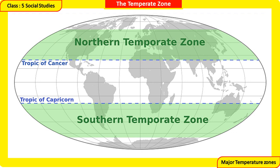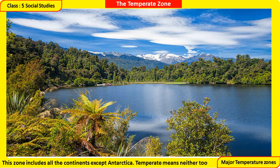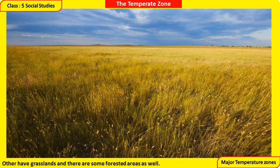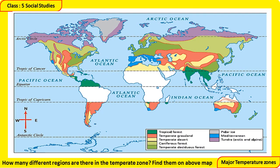The Temperate Zone includes all the continents except Antarctica. Temperate means neither too hot nor too cold, which describes the climate in this zone. Some areas are dry and arid, others have grasslands, and there are also forested areas. How many different regions are there in the Temperate Zone? Find them on the map.